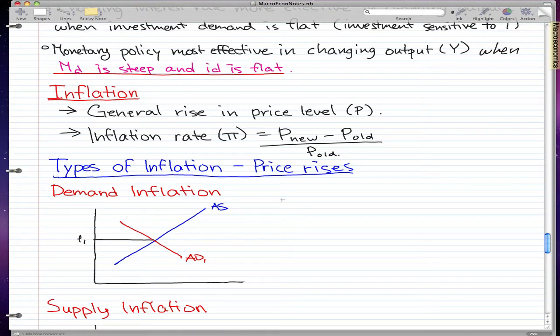The first type of inflation is demand inflation. Demand inflation is when the aggregate demand moves right, when AD moves right, and this will cause one of two things to happen. It will cause our aggregate expenditure to rise or our marginal propensity to spend, which is Z, to rise.